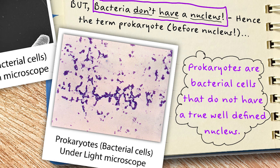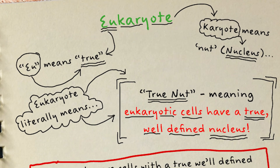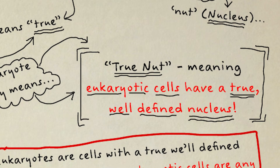So prokaryotes are bacterial cells that do not have a true, well-defined nucleus. What then does eukaryote mean? 'Eu' means true, and as we've already established 'karyote' means nut, or more accurately the nucleus. Therefore eukaryote literally means 'true nut', which means that eukaryotic cells have a true, well-defined nucleus.